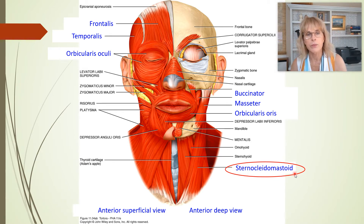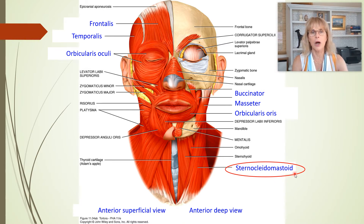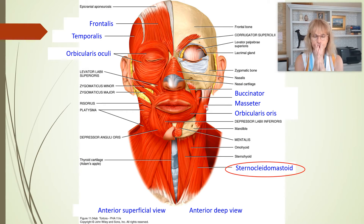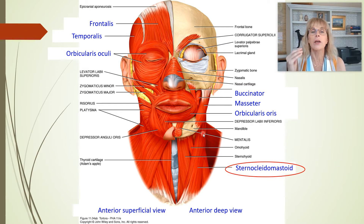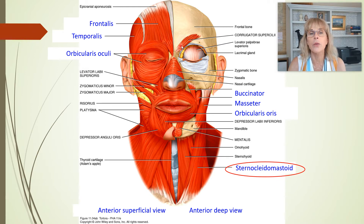I want to point out a couple of things. On many of the images from your textbook or here on the PowerPoint, the right side of the person is different from the left side. By convention, on one side we show what it looks like if you just take off the skin; on the other side, it's as if you take off the skin and then another layer of muscles. So a small muscle hidden underneath can be seen once that top layer is removed.